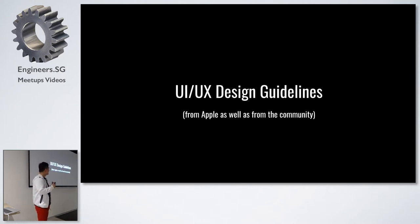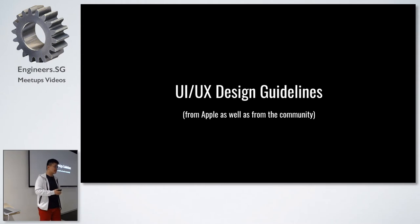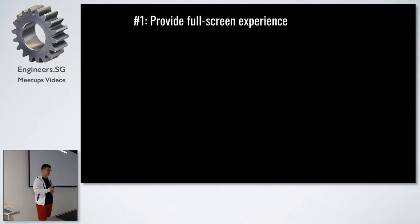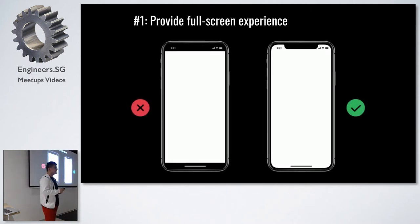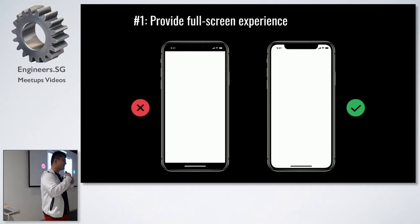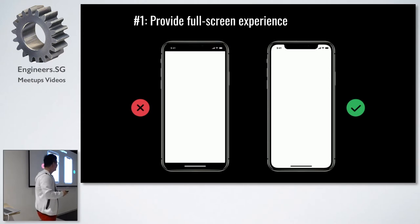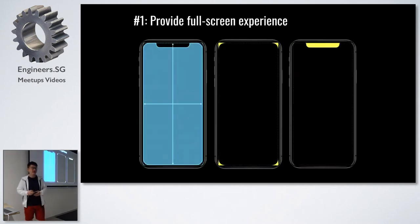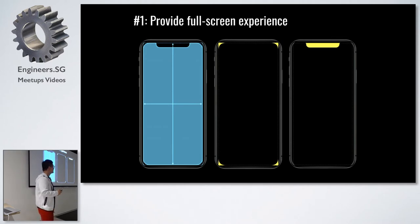I'd like to share a few UI/UX guidelines based on the changes we've seen. The first suggestion is: whenever possible, always provide a full-screen experience. The easiest way to adapt your app to iPhone X is to put a black border at the bottom and top, but this is strongly discouraged because users want an immersive full-screen experience. However, at the same time, don't let the rounded corners or sensor housing block any of your important controls.